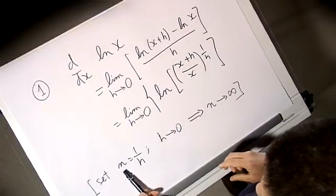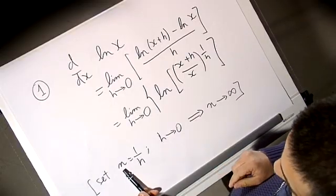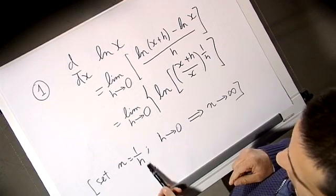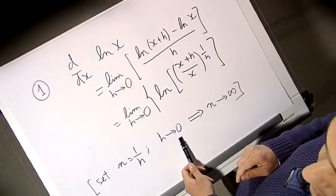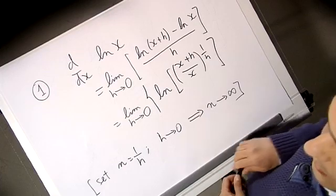Now it's useful to make a substitution. You can introduce another variable n, and this is just taken to be 1/h. So if you have h that goes to 0, your n will go to infinity.